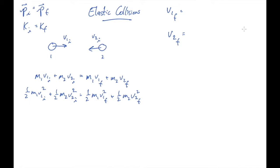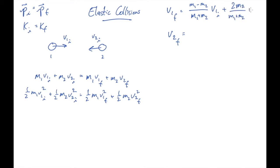I'm going to write down the results. The algebra is not interesting — we solve these two equations for two unknowns in whatever way you prefer. For v1 final, the result is: (m1 - m2)/(m1 + m2)·v1i plus 2m2/(m1 + m2)·v2i. This is the final velocity of object 1 in terms of the two initial velocities and all the masses. There's a very similar expression for v2 final.